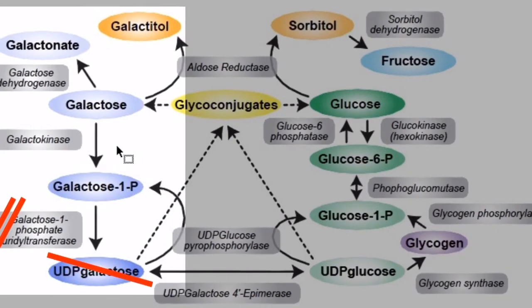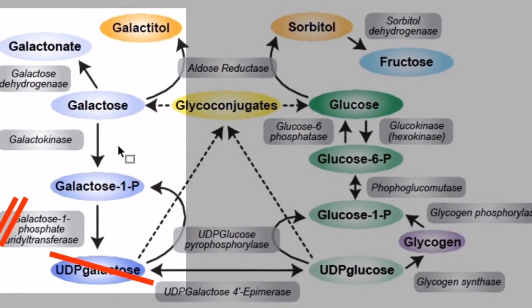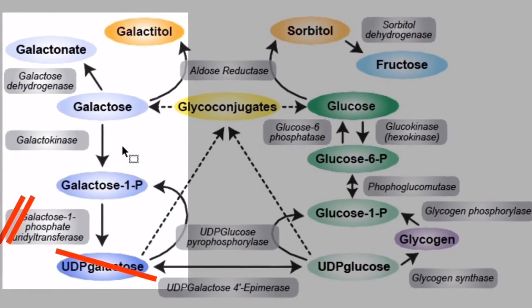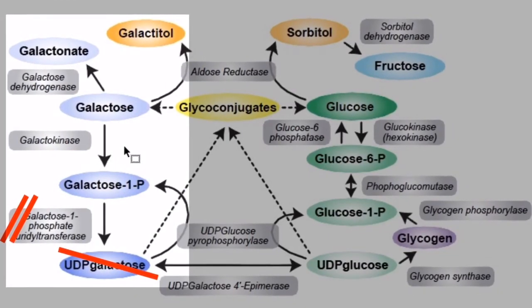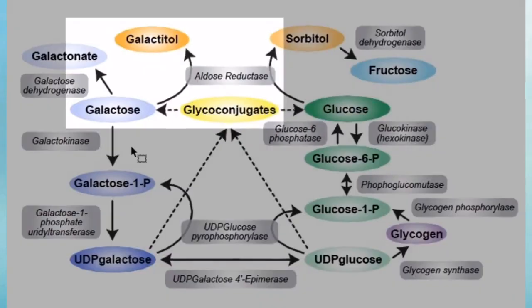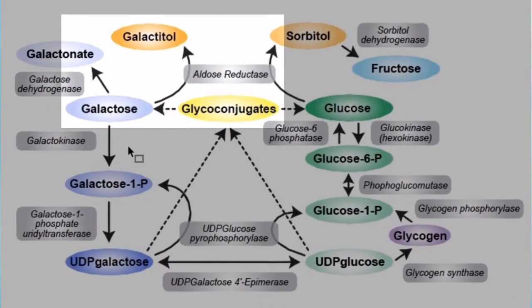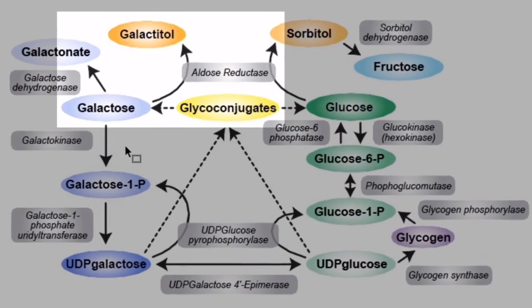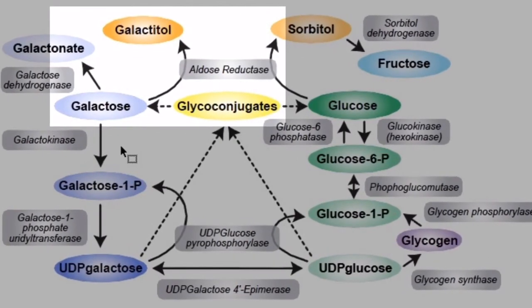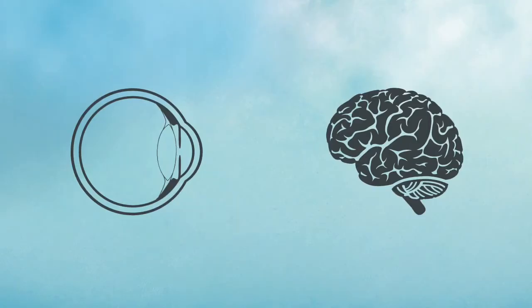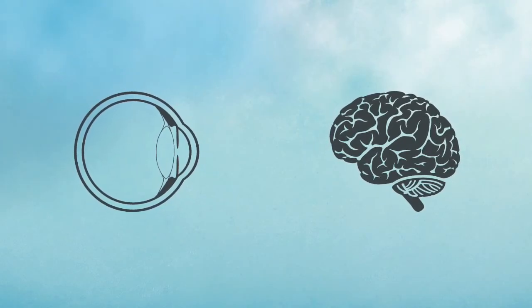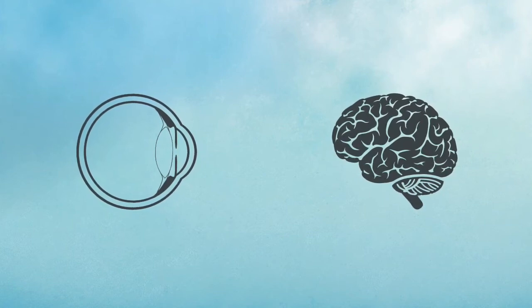A deficiency in galactose-1-phosphate uridyl transferase will block the formation of UDP-galactose. This will result in the accumulation of galactose-1-phosphate and eventually of galactose as well. As galactose builds up in the circulation, it can enter the lens of the eye, where part of it is converted to galactitol or dulcitol by aldose reductase. Galactitol produces osmotic effects, including swelling of lens fibers, that may result in cataracts.